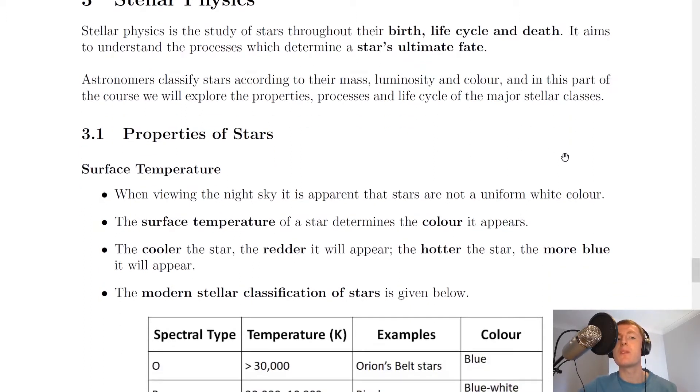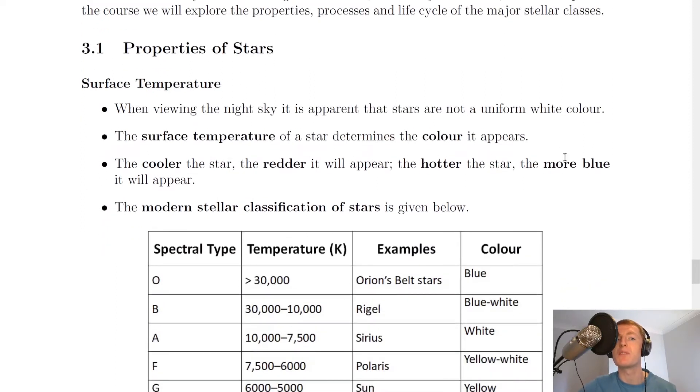So firstly, we're going to start looking at properties of stars. The first property is surface temperature. When viewing the night sky it is apparent that stars are not a uniform white color. The surface temperature of a star determines the color it appears.